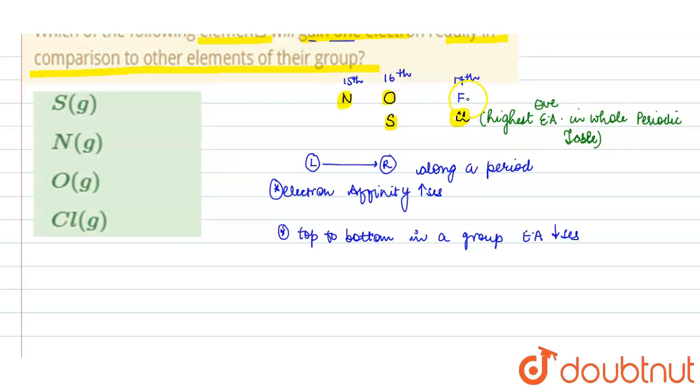Even more than fluorine. This is because due to the small size of fluorine, the incoming electron will suffer some inter-electronic repulsion, so that's why it has less negative electron affinity.